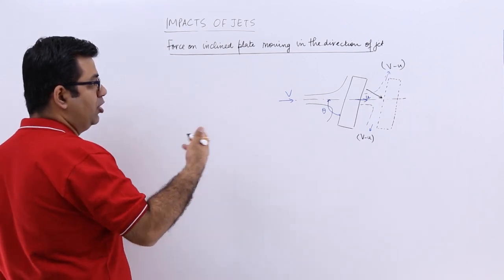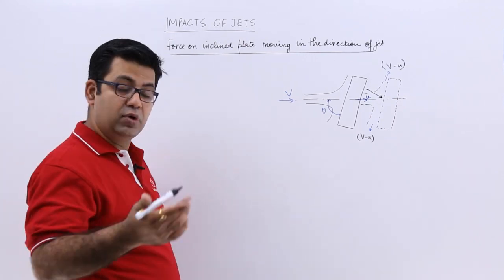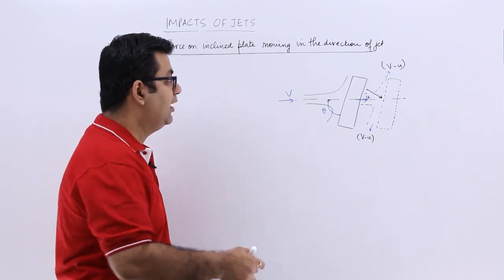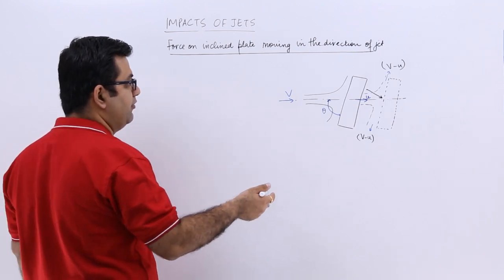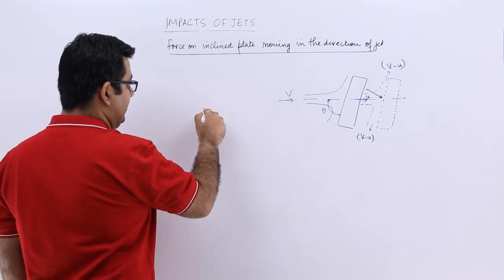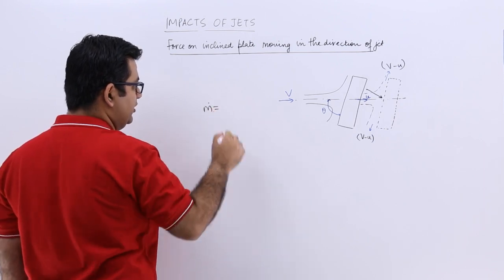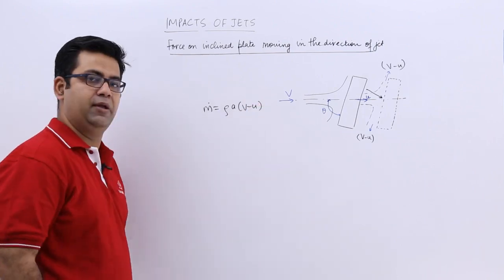So it is almost the same, but in this case we will have to take the force and the velocity component in a direction perpendicular to the plate. We have seen this in the previous section also where the plate was stationary. So the mass flow rate will be rho into a into v minus u, that's the same thing.